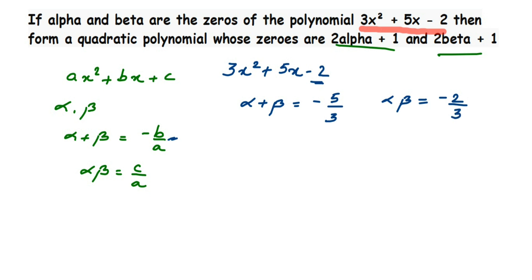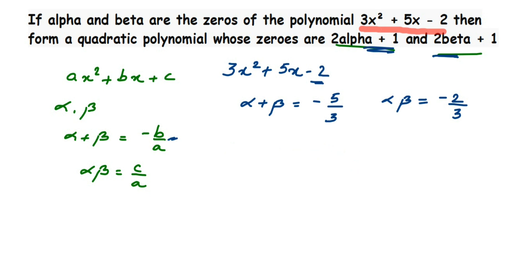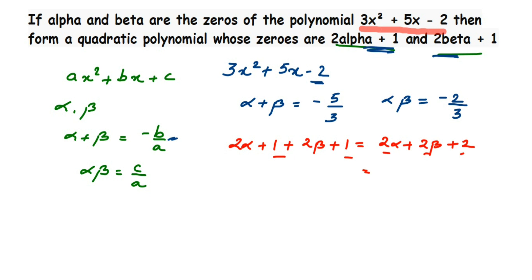Now I am going to find the actual polynomial. The zeros given are 2 alpha plus 1 and 2 beta plus 1. If I add these two zeros: 2 alpha plus 1 plus 2 beta plus 1 equals 2 alpha plus 2 beta plus 2. Since 2 is common, I take it out: 2 into (alpha plus beta plus 1).